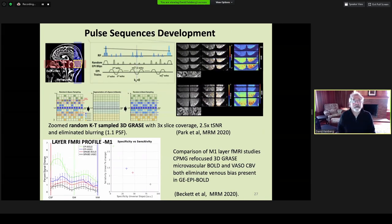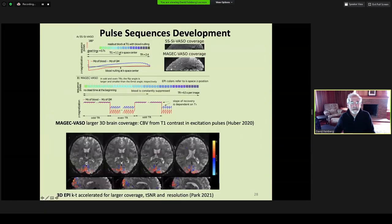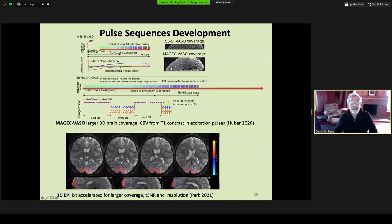I want to briefly talk about pulse sequence development. I want to draw your attention to some sequences that are used specifically for layer fMRI because they eliminate this large draining vein bias in standard gradient echo EPI. The 3D GRACE and the VASO techniques, which are CBV contrasts, are used and are both being greatly improved in both coverage and sensitivity. Dr. Huber has a new sequence that greatly extends the acquisition time using the contrast of low flip angles rather than an inversion pulse, and my group is supplying advanced acceleration techniques developed in 3D GRACE to 3D EPI.